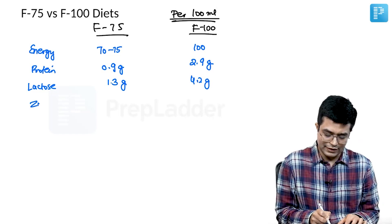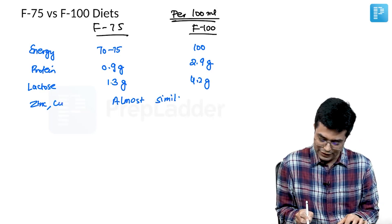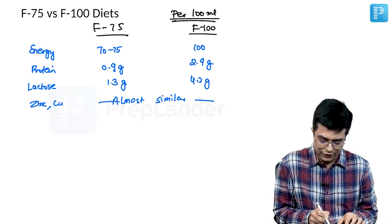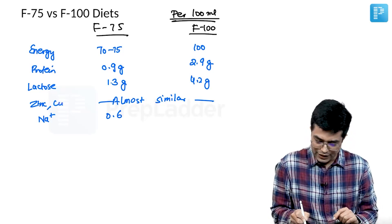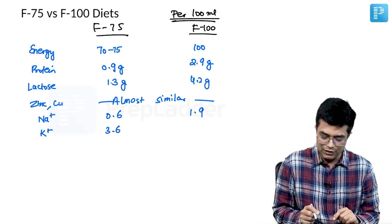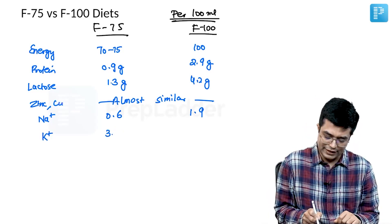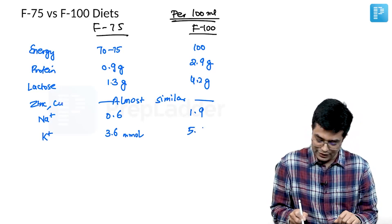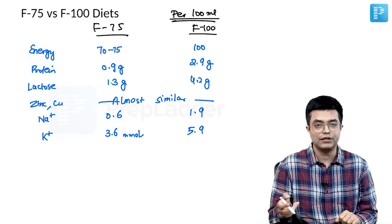Zinc and copper levels are almost similar in F75 and F100 diet. Regarding sodium and potassium: sodium in F75 is on the lower side at about 0.6 millimole per 100 ml, whereas it is 1.9 millimole per 100 ml in F100. Potassium content is 3.6 millimole per 100 ml in F75 and 5.9 millimole per 100 ml in F100. These are the key pointers about F75 and F100 diet to remember.